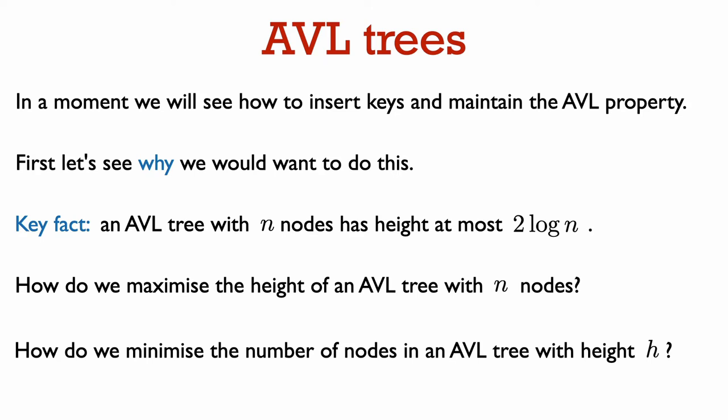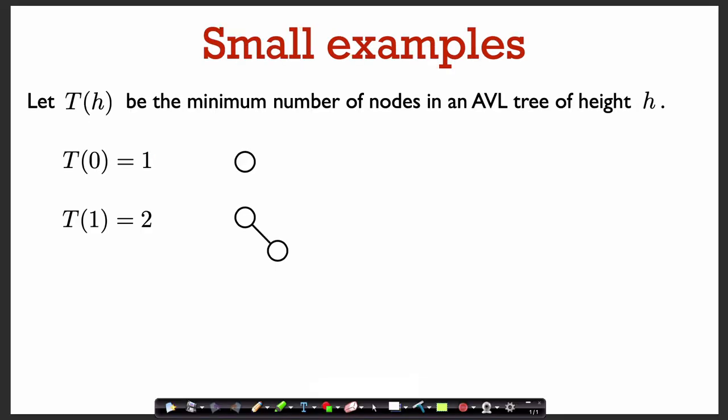It turns out to be easier to think about this question in a slightly different but equivalent way. Instead of fixing the number of nodes, let's fix the height of an AVL tree to be h. Now the question becomes: what is the minimum number of nodes that an AVL tree of height h can have? Think about these two formulations of the question to convince yourself that they are equivalent. Let T of h be the minimum number of nodes in an AVL tree of height h.